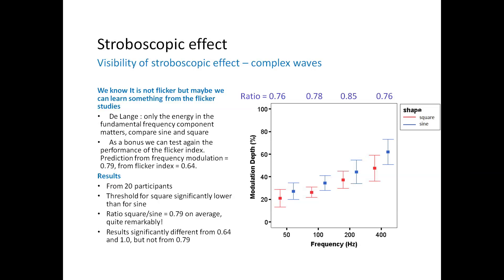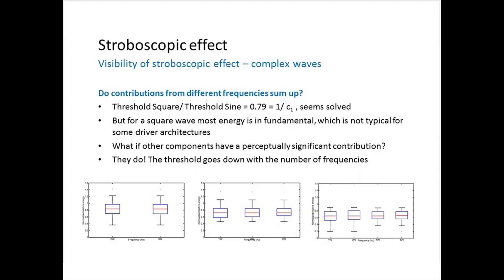DeLange used simple waveforms — square and triangular — with most energy in the fundamental frequency. We wondered what happens if we have multiple frequencies that are all quite visible. Would they sum up, or would we only take the maximum? We did an experiment showing different frequencies at equal visibility and checked what happens. If there is no summation, the threshold will not depend on the number of frequencies. But looking at graphs for two, three, and four frequencies, thresholds actually go down with the number of frequencies — meaning they do sum up.